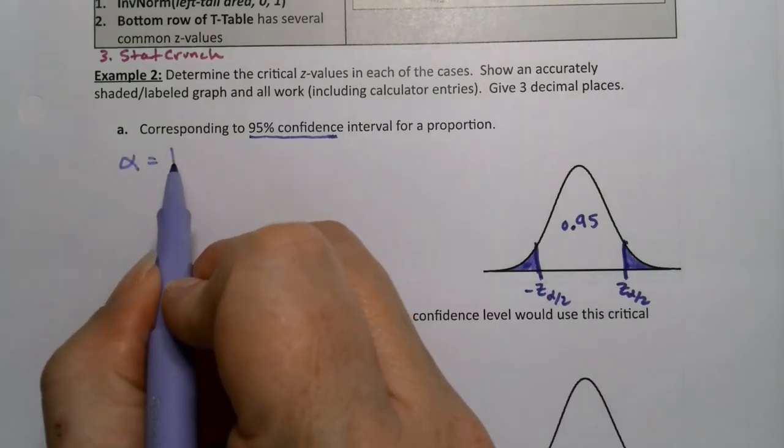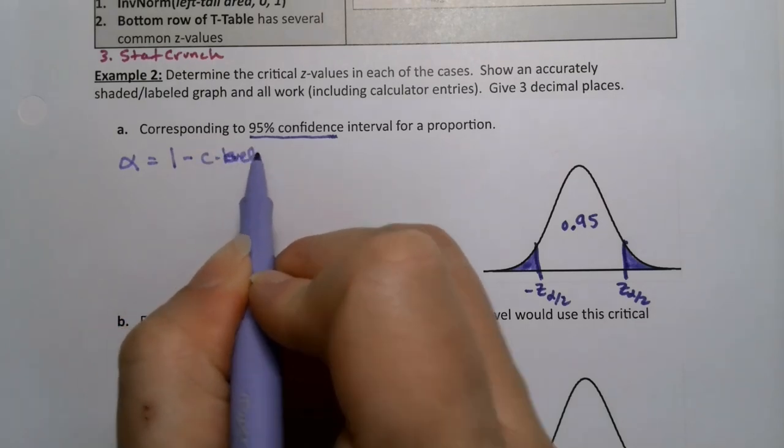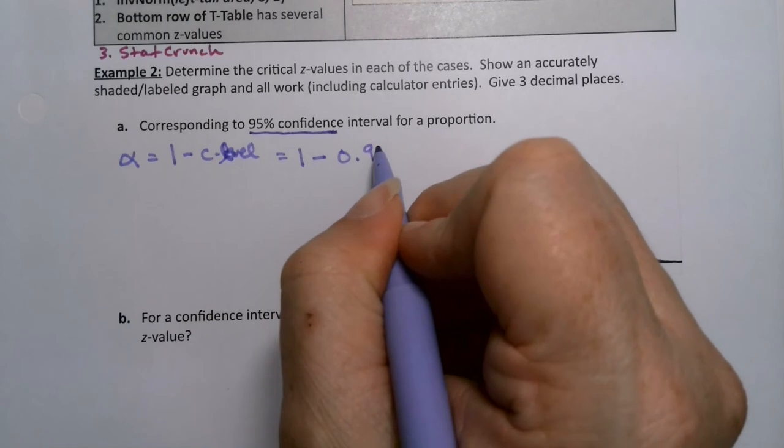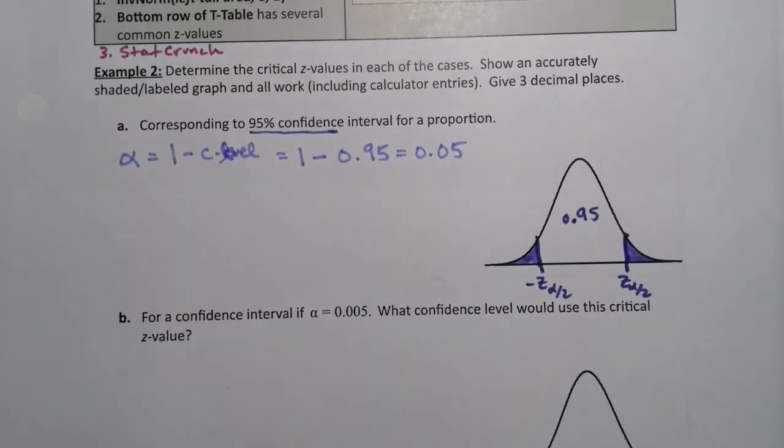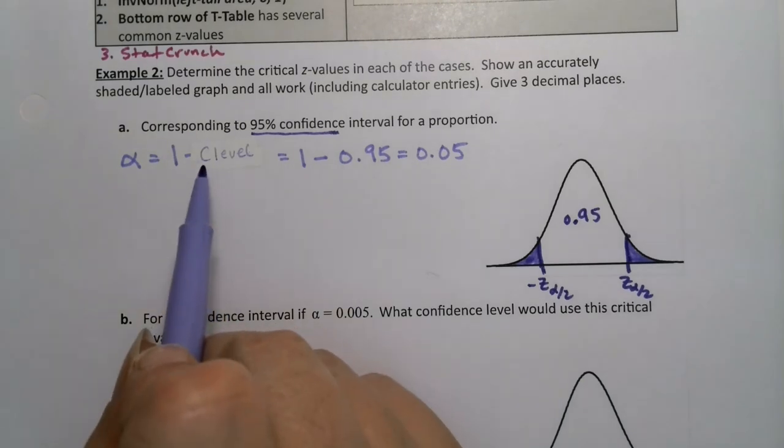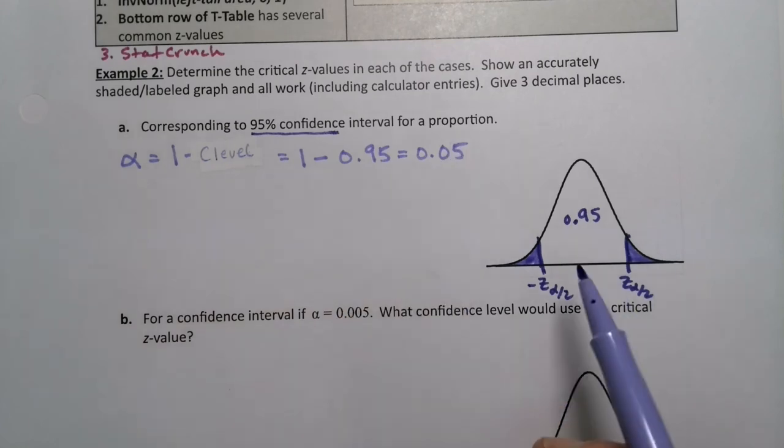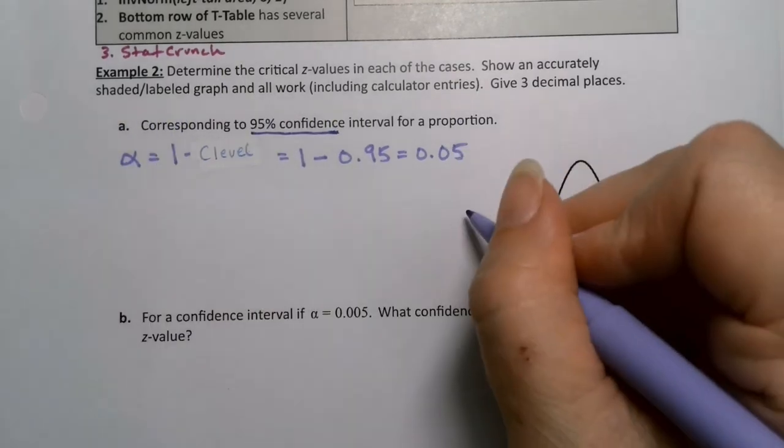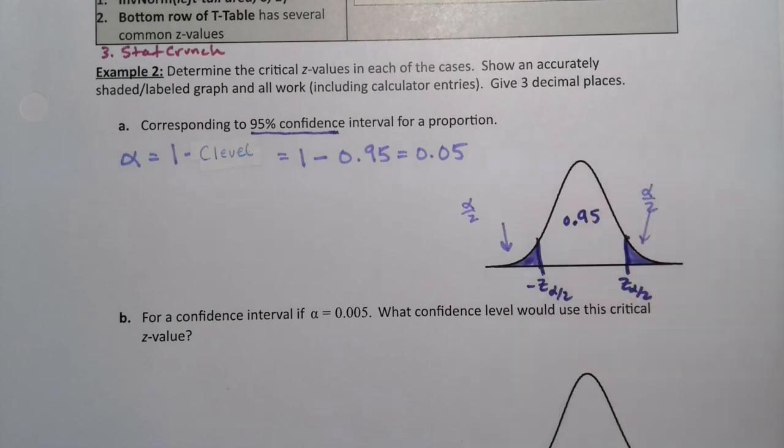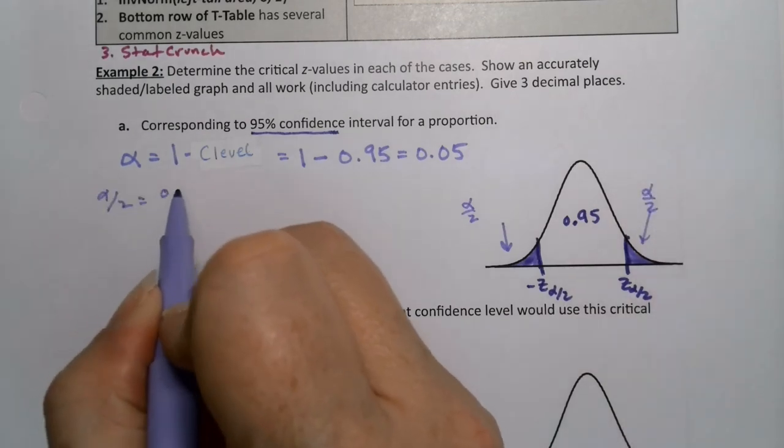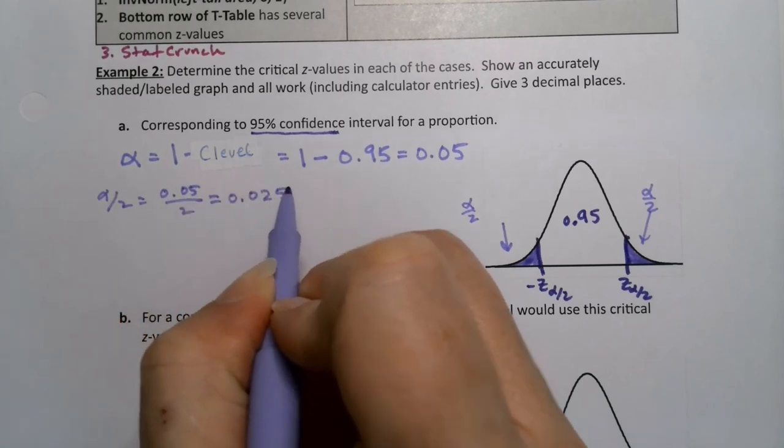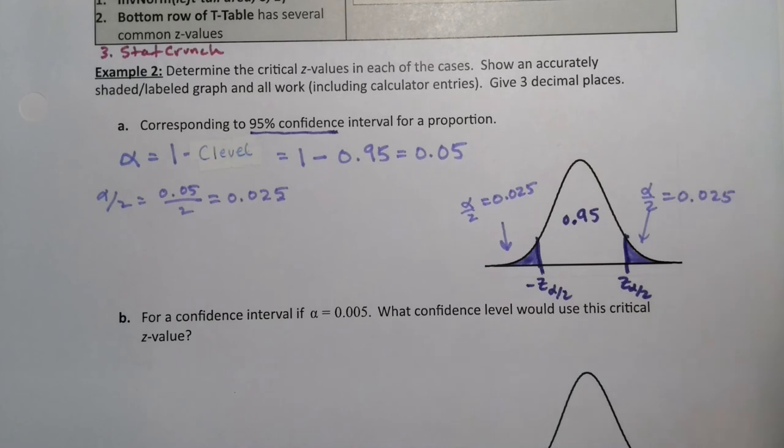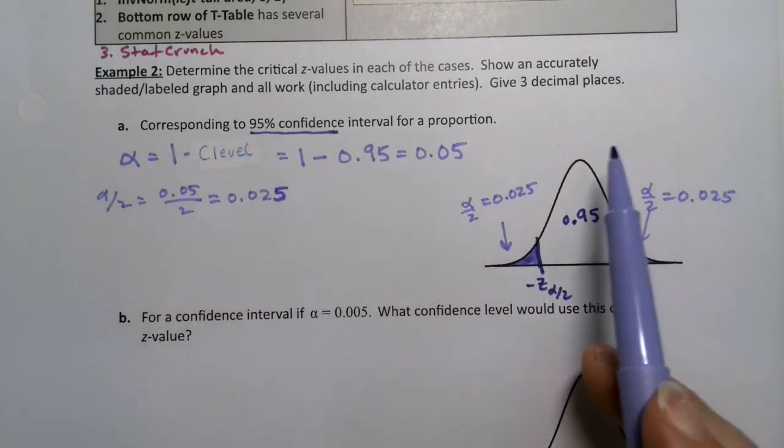So what is alpha? Alpha is 1 minus your confidence level. They're complements of each other. That would be 1 minus 0.95, which is 0.05. That's both tails put together. So each tail on its own, in order to appropriately label this and shade it, I have to write alpha over 2, and that alpha over 2 is equal to 0.05 divided by 2, which is 0.025. That means this side over here on the left is 0.025, and this side over here on the right is 0.025. I have appropriately labeled and shaded my curve now.